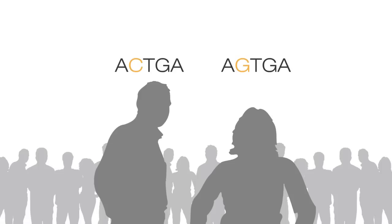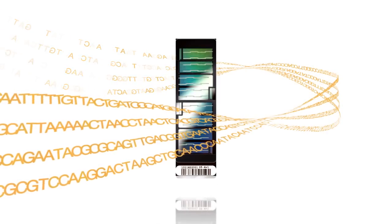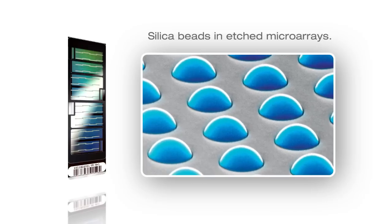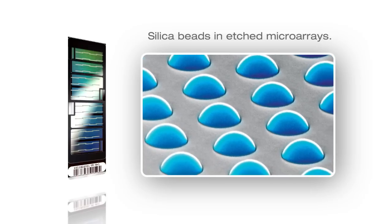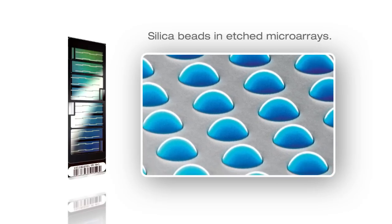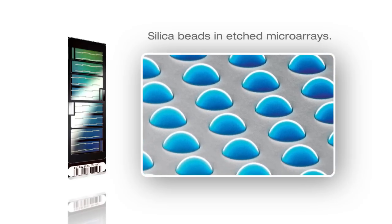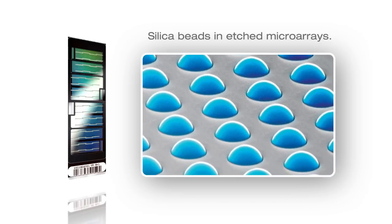The secret is in the combination of the Infinium assay with Illumina's BeadChip technology. On the surface of each BeadChip, hundreds of thousands to millions of genotypes for a single individual can be assayed at once.